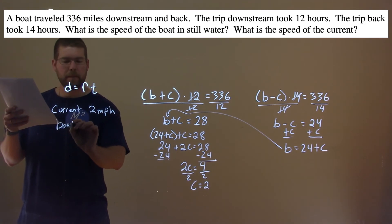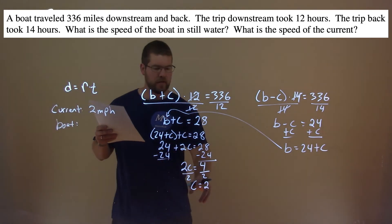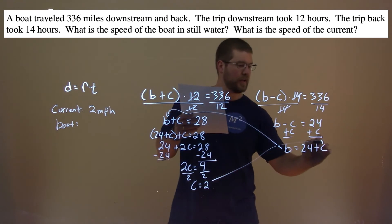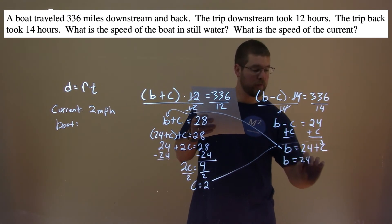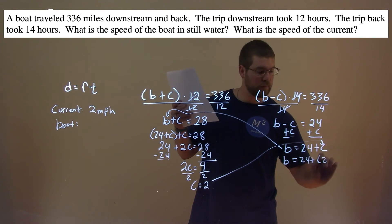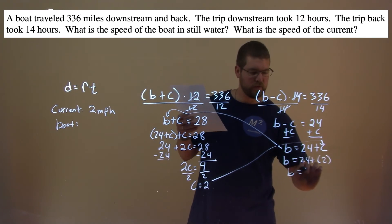The boat speed—we take that value for the current, and we're going to plug it into the C here. So B equals 24 plus, the C is 2, and 24 plus 2 is 26.